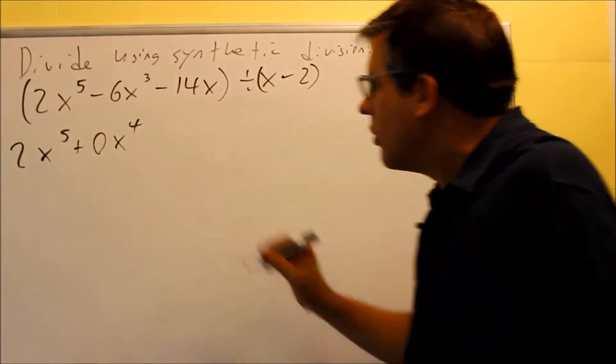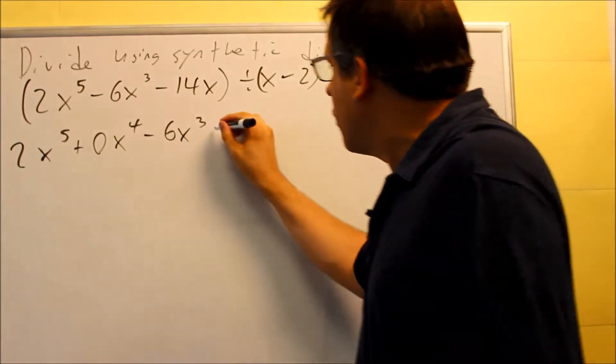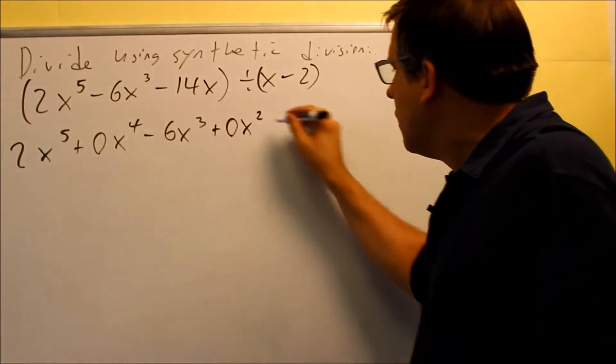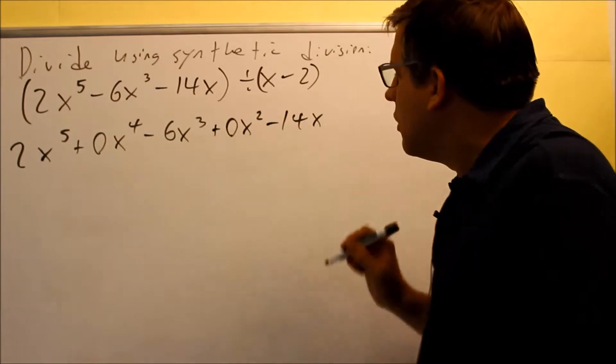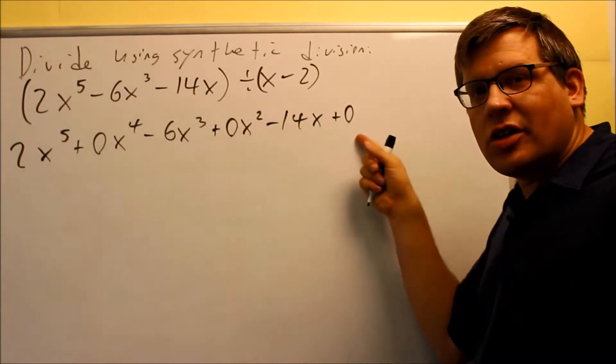So I'm going to put in a 0x to the fourth. And then I have the cube that's there, the square we're missing. So I'm going to put a 0x squared in there. The 14x is there, but then I don't have the number on the end. So you also need to put a 0 on the end.